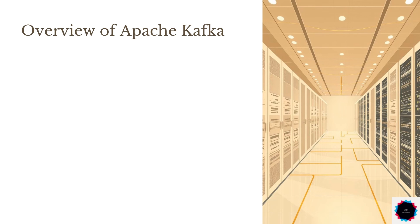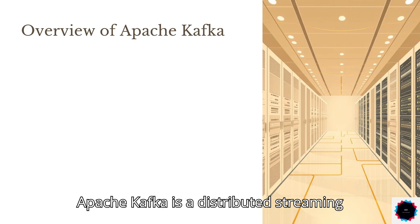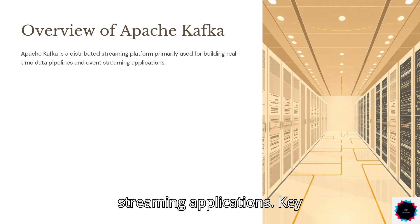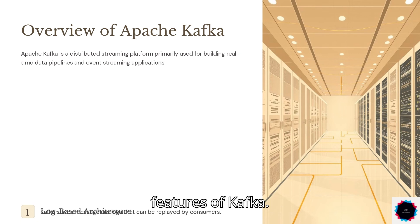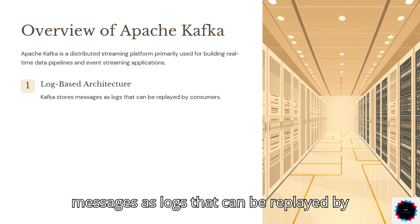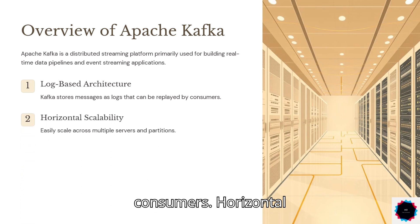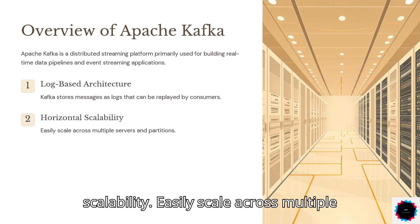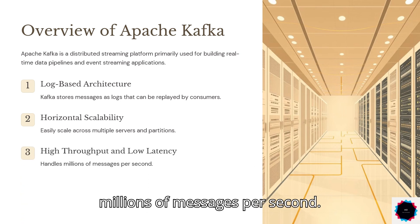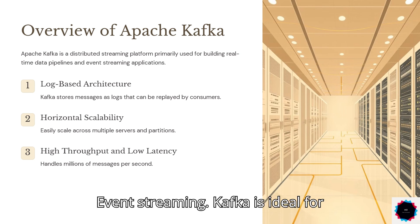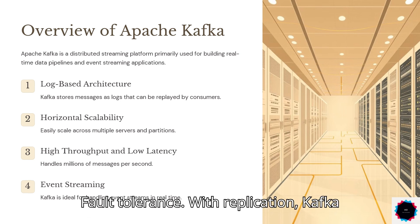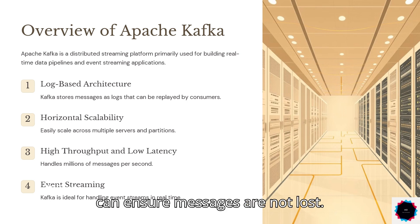Overview of Apache Kafka. Apache Kafka is a distributed streaming platform primarily used for building real-time data pipelines and event streaming applications. Key features include: Log-Based Architecture – Kafka stores messages as logs that can be replayed by consumers; Horizontal Scalability – easily scale across multiple servers and partitions; High Throughput and Low Latency – handles millions of messages per second; Event Streaming – ideal for handling event streams in real-time; and Fault Tolerance – with replication, Kafka can ensure messages are not lost.